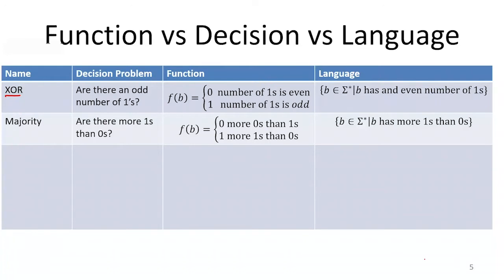You can think of XOR as operating on a binary string of arbitrary length. The decision version might ask: are there an odd number of ones in the string? XOR for an arbitrary number of input bits should return one whenever the number of ones was odd, and zero whenever the number of ones was even. So to express this as a decision problem, we're asking: are there an odd number of ones? As a function, we'd take some bit string as input and output zero for even ones, one for odd ones.